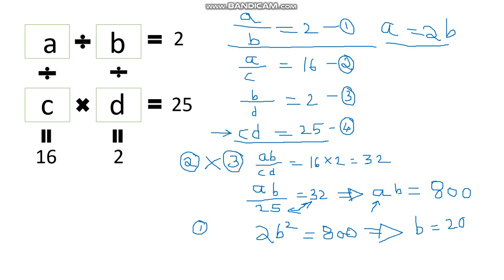So b equals 20. Now from a equals 2b, we get a equals 2 × 20, which equals 40. So the value of a is 40.